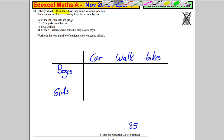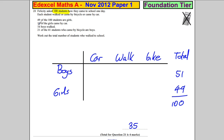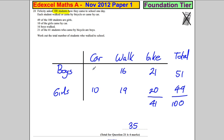We know 49 are girls, so the girls total is 49, and since the overall total is 100, boys must be 51. 10 girls came by car, 16 boys walked. 41 students came by bike in total, 21 of them boys, so 20 are girls. For the girls to add up to 49, there must be 19 girls who walked. For the boys to add up to 51, there must be 14 boys by car. So the total number of students who walked is 19 plus 16, which is 35. A two-way table shows this much more clearly.